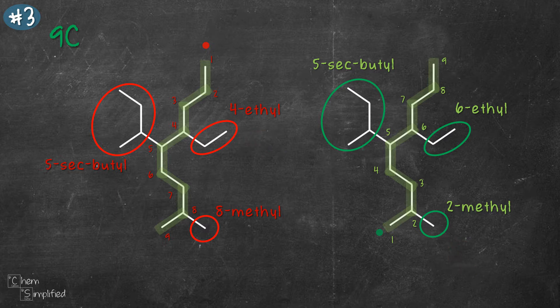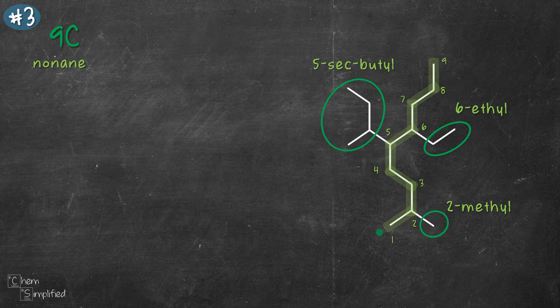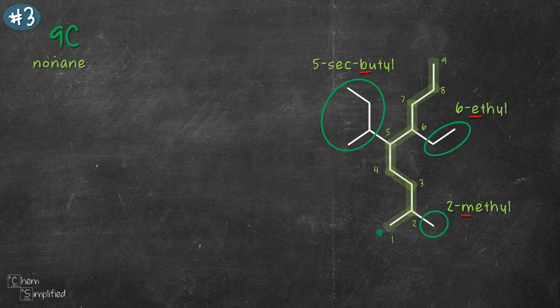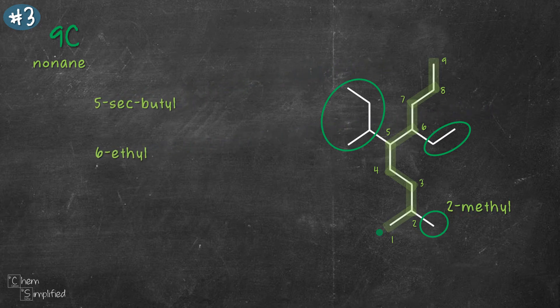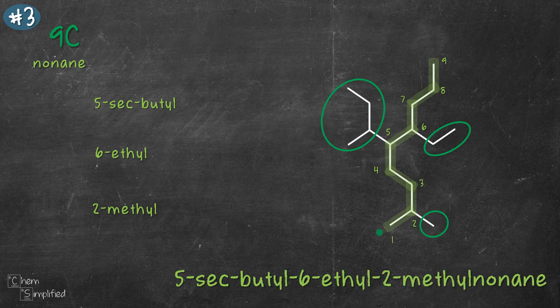Before naming the compound, let's alphabetize the three substituents: sec-butyl, ethyl, and methyl. For sec-butyl, 'sec' represents secondary — we ignore that prefix and use B for butyl. So we have B for butyl, E for ethyl, and M for methyl. Alphabetically, B comes first, then E, then M. Combining the substituents with our 9-carbon chain (nonane), the final name is 5-sec-butyl-6-ethyl-2-methylnonane.